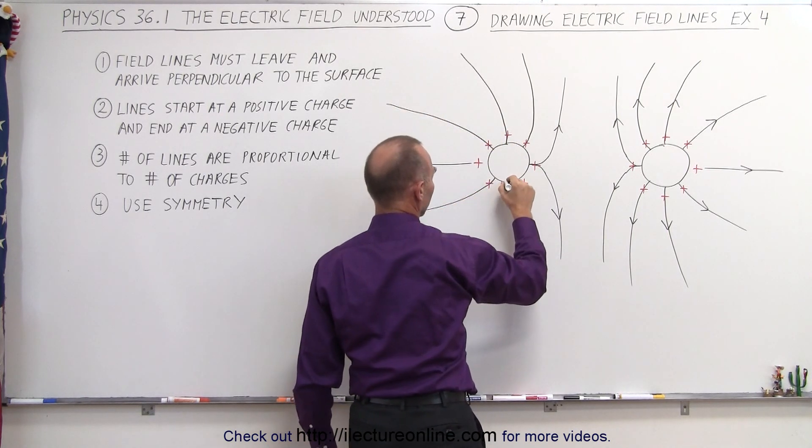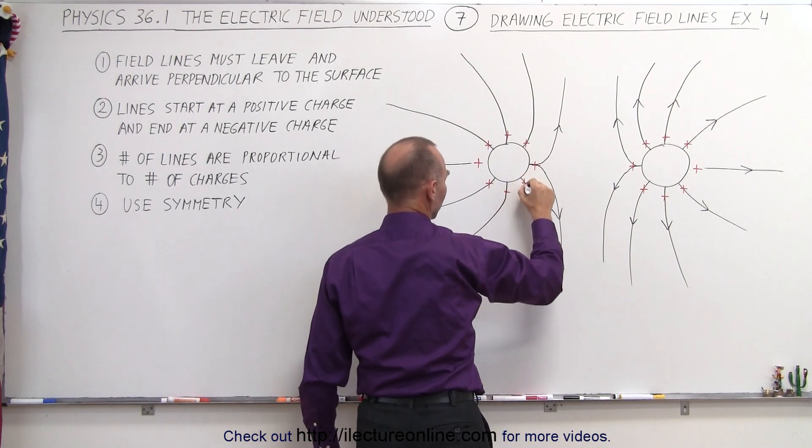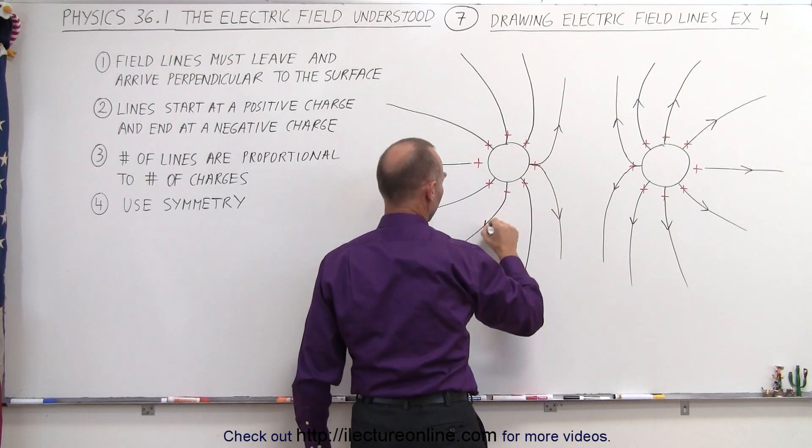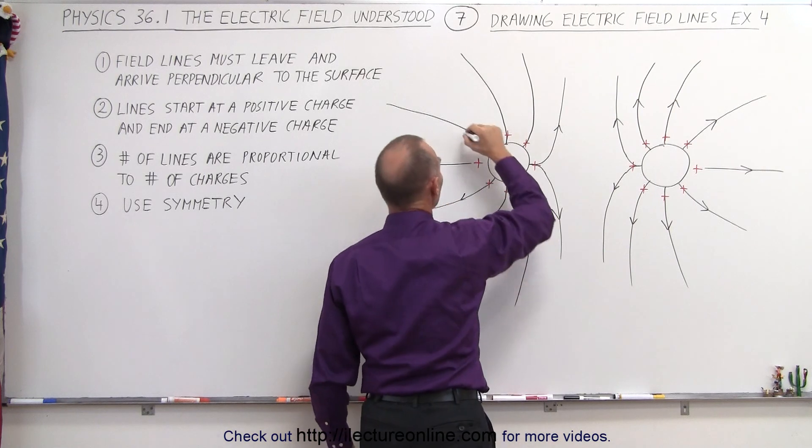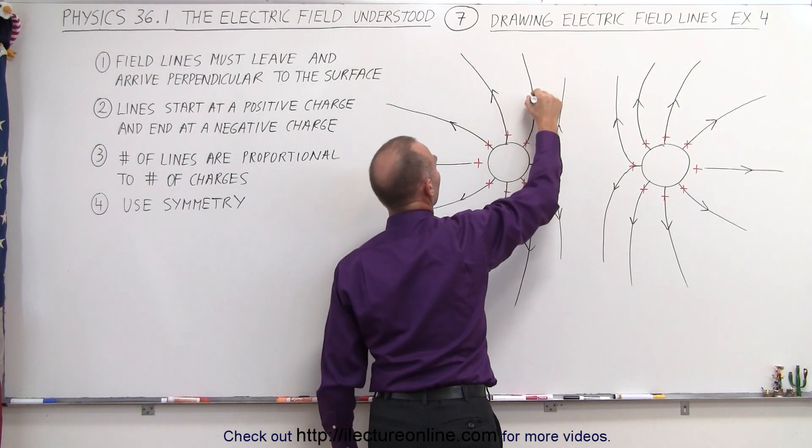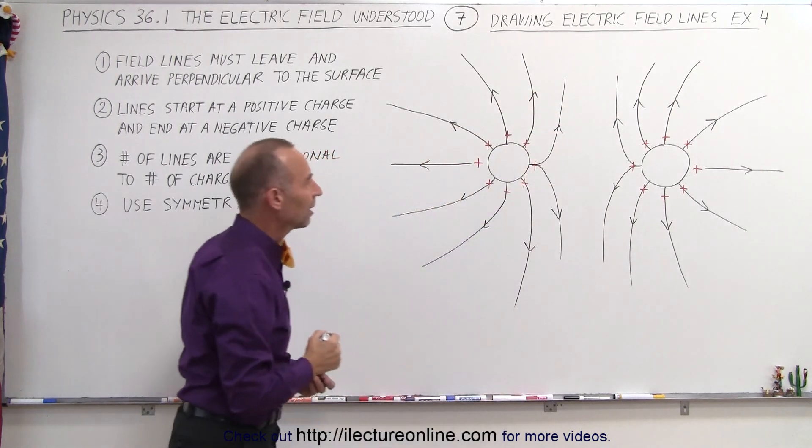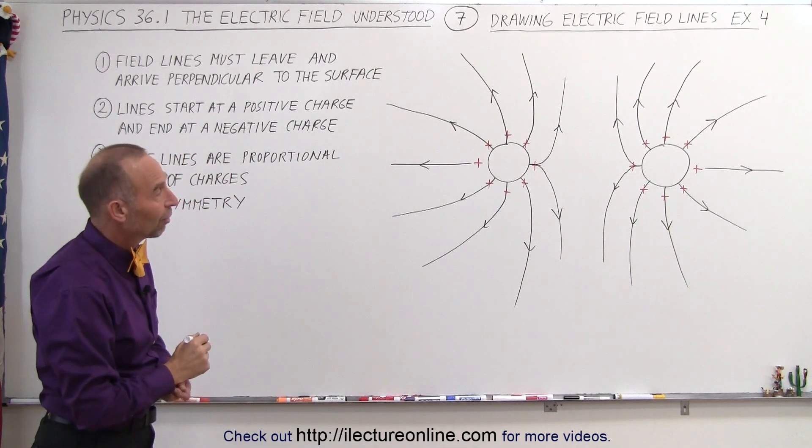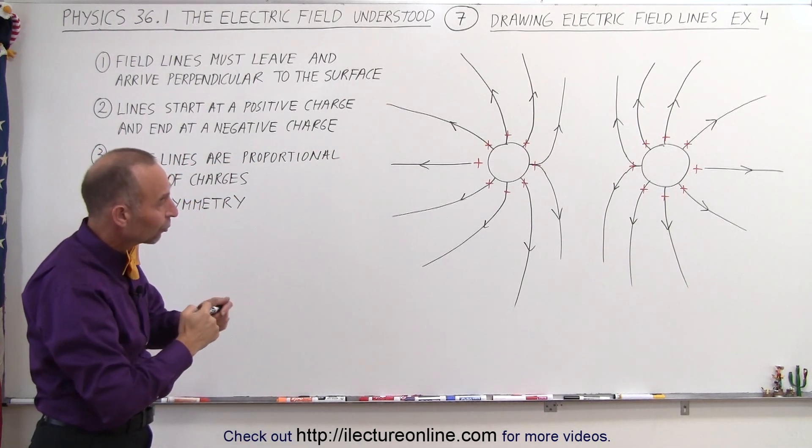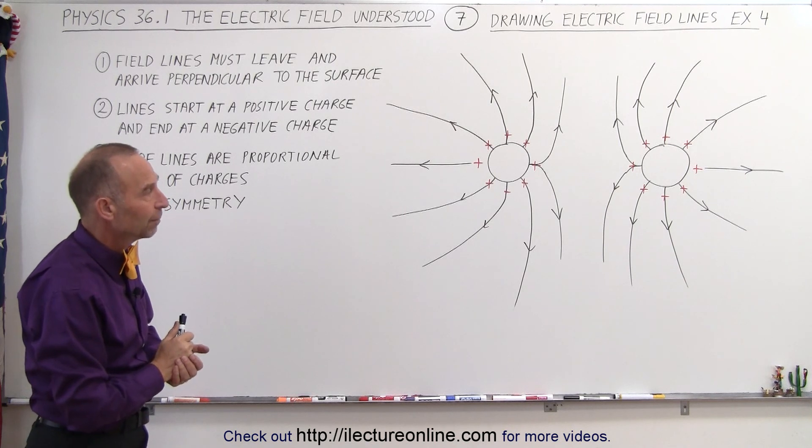Curve this way, coming straight out, curving this way, and coming straight out and curving this way. And let me draw our arrows. And we have a fairly good representation of what the electric field will look like around those two objects that both have positive charge on them.